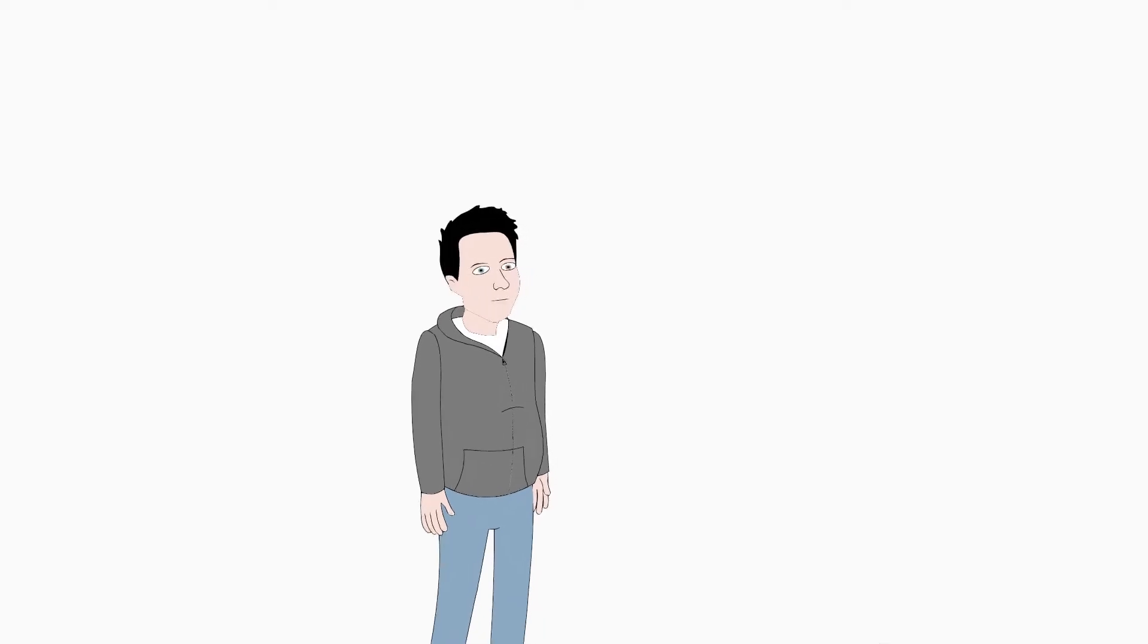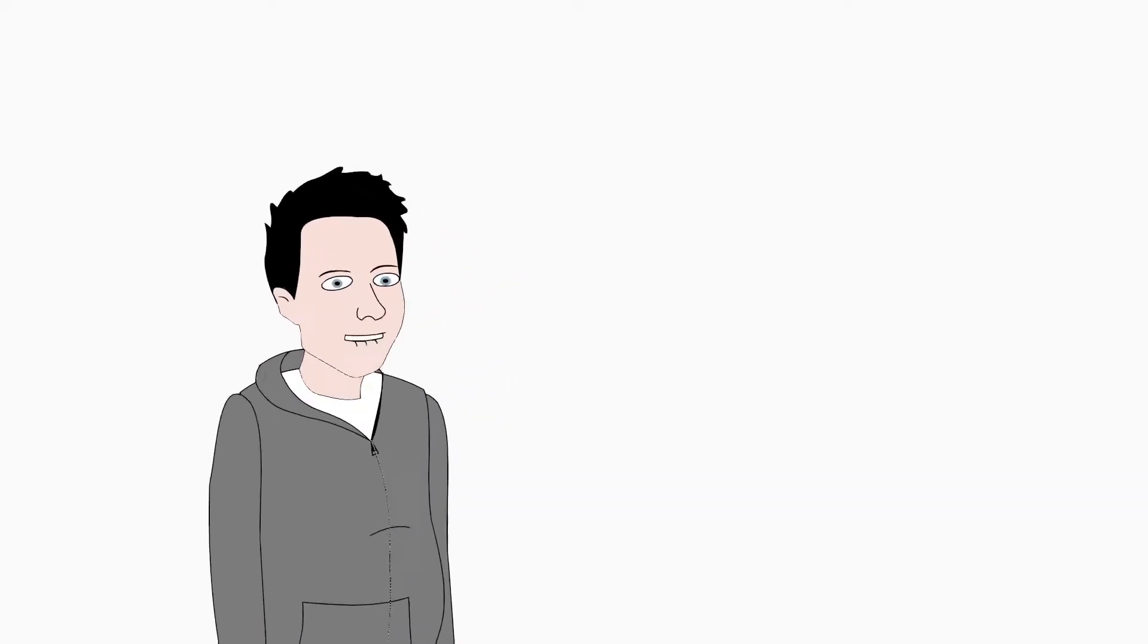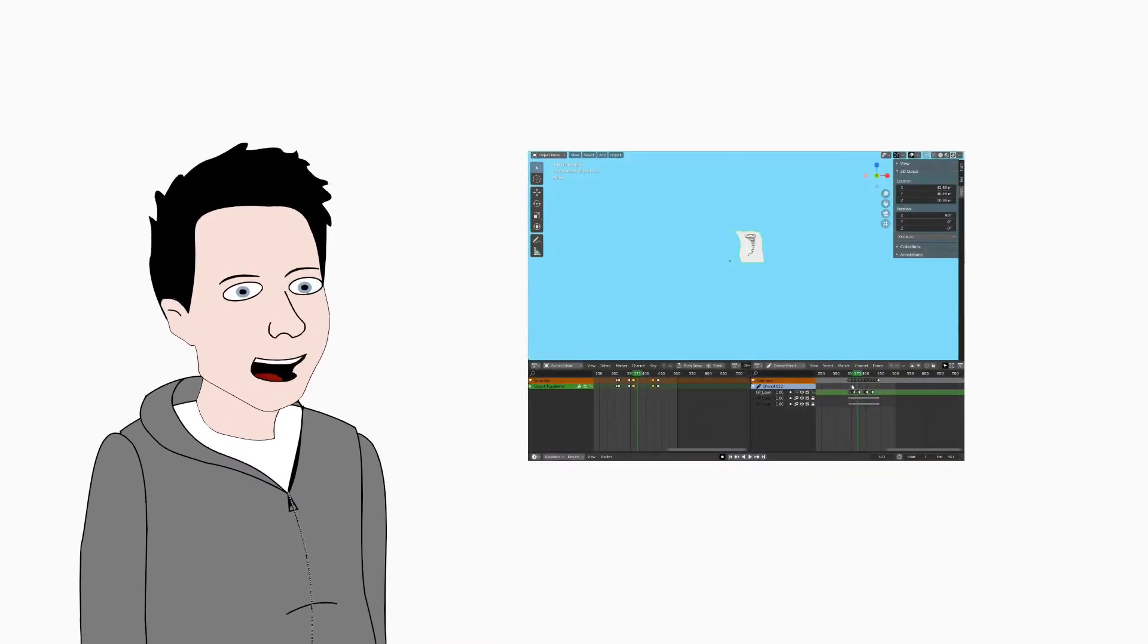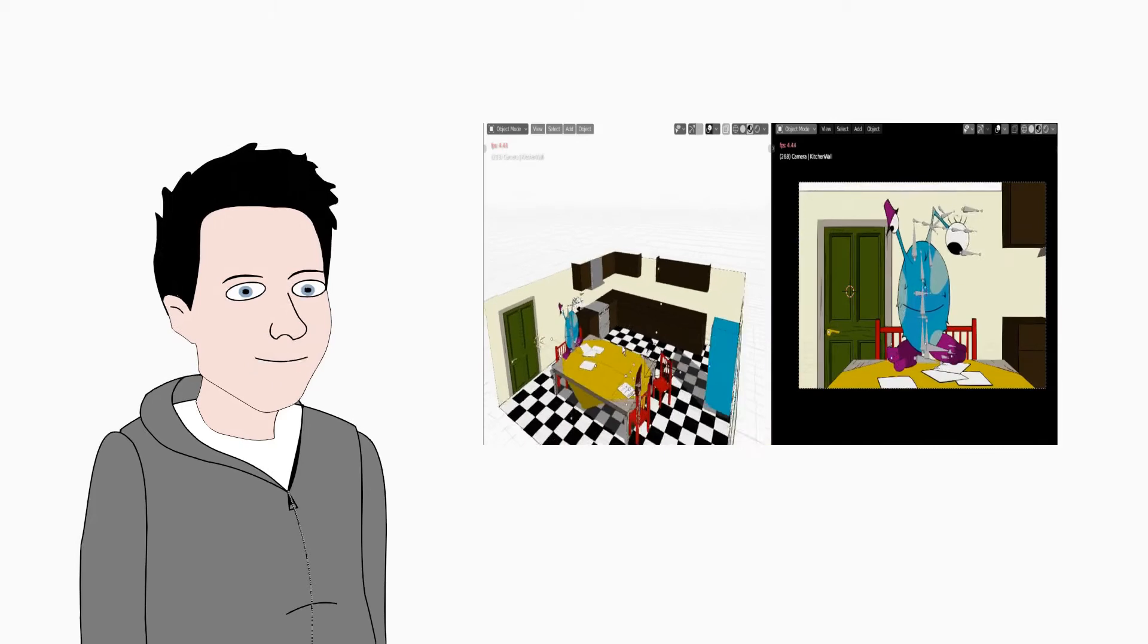I've been using Blender 2.9 to create a short film called Pen Pals. It mixes 2D frame-by-frame animation, 3D scenes, and 2D puppeting.